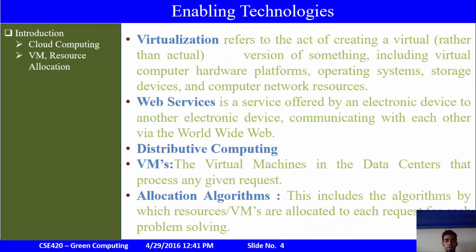Enabling technologies for cloud computing include: Virtualization, which refers to creating a virtual version of something including virtual hardware, operating system, storage devices or network resources. Web services, a service offered by an electronic device to another. Distributed computing, similar to cloud computing. Virtual machines are the data centers that process any given request. Allocation algorithms conduct resource allocation.